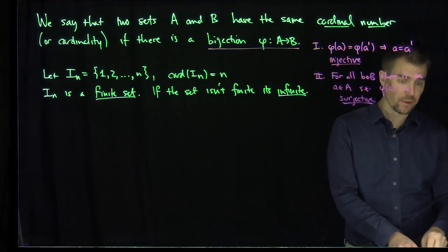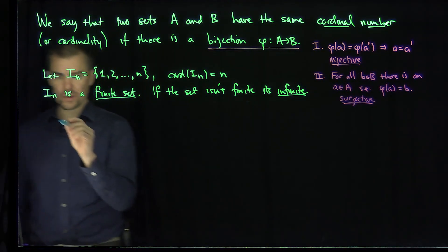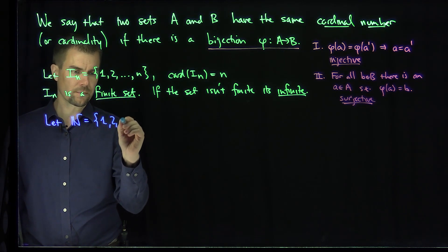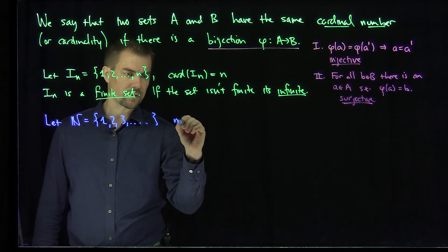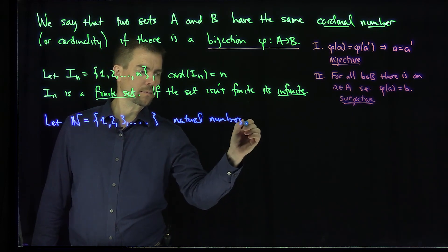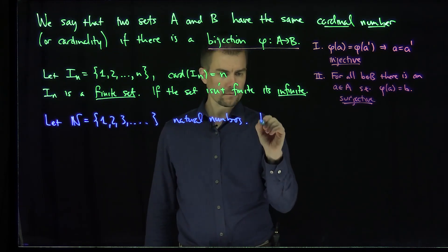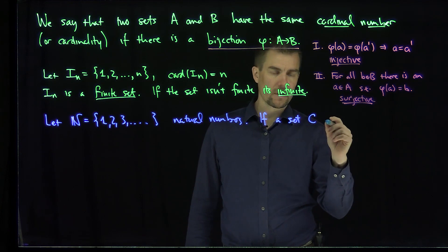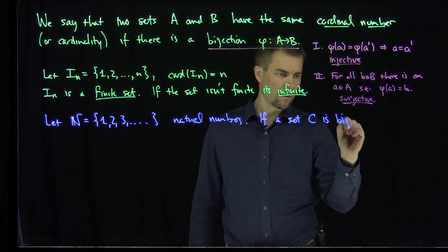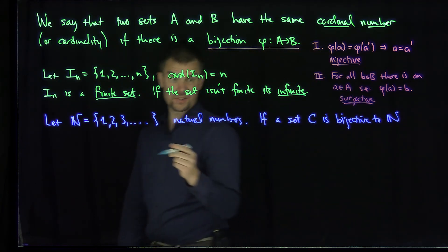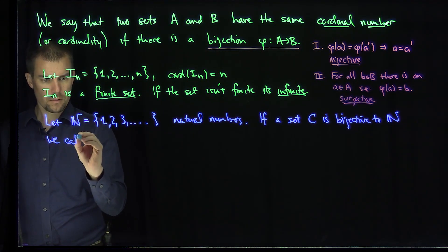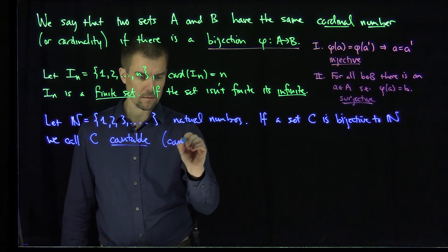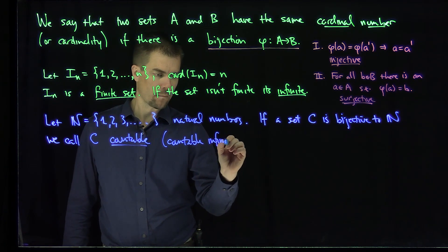We also want to draw a dichotomy between something called countable and something called uncountable. We let N be the set of natural numbers, 1, 2, 3, forever. If a set C has the same cardinal number as N, is bijective to N, we call C countable or countably infinite.